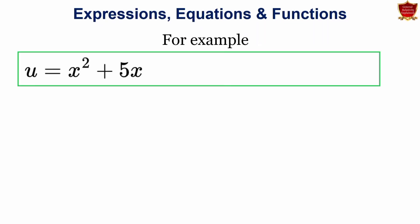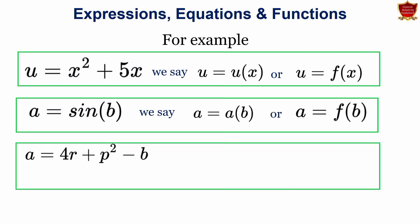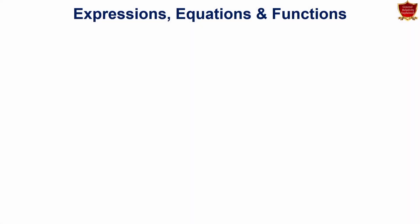So we can see few examples. For example, this one u equals to x square plus 5x. We say u equals to u of x or u equals to f of x. That is, u is a function of x. If you get a is equal to sin of b, we will soon deal with trigonometric functions in our course. So we say that q is equal to q of t or we can just say that a is a function of b. Similarly, if we get a equals to 4r plus p square minus b, we say that a equals a function of rpb or a is a function of rpb.